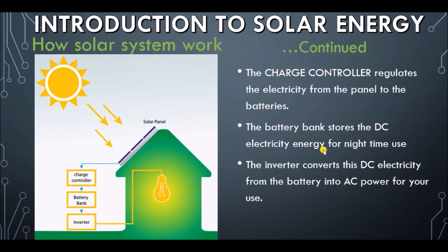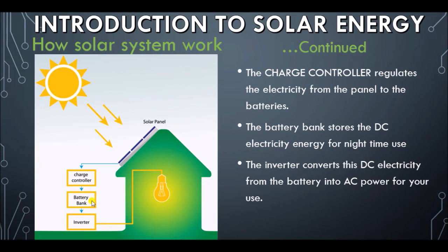We also have the battery bank. The battery bank stores this electricity. Remember that solar energy is only available during the day — just about four or five hours. What happens at night? What happens when you come back from work around 7 or 10 pm and want to watch television, and there is no sunlight? This is where the battery comes in. The energy generated during the day can be stored in this battery bank, so that at night you can turn on your solar power system and tap the energy stored in the bank.